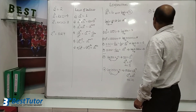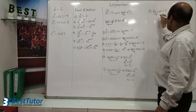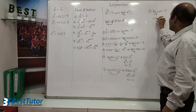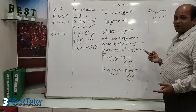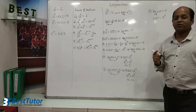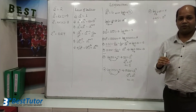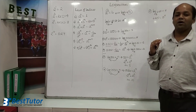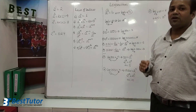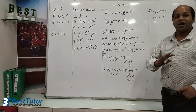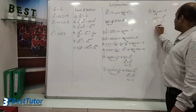Seventh example: log of 625 to the base 5 equals n. Remove the log: 625 is equal to 5 raised to n. What is 625? You should know powers of numbers. Powers of 2 up to 2 raised to 12, powers of 3, 4, 5 up to the 6th power — knowing these makes your calculations faster. 625 is 5 raised to 4, so 5 raised to 4 equals 5 raised to n, therefore n equals 4.